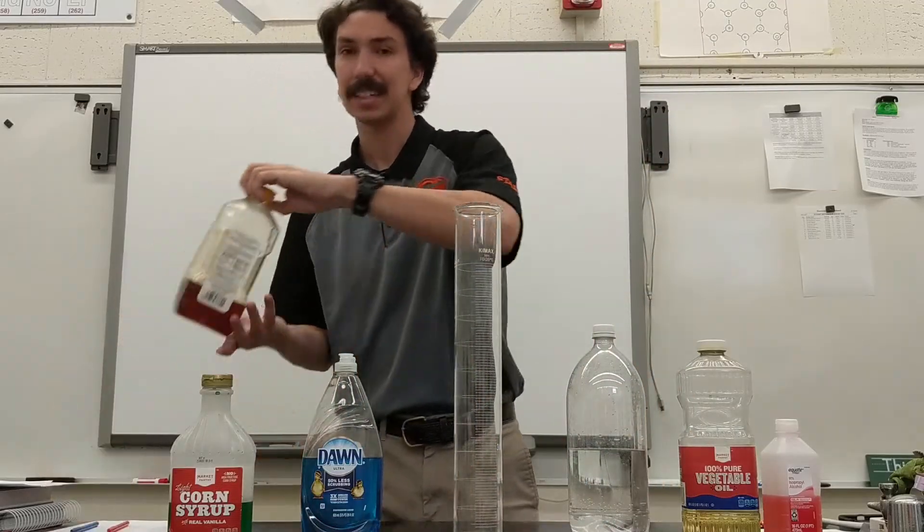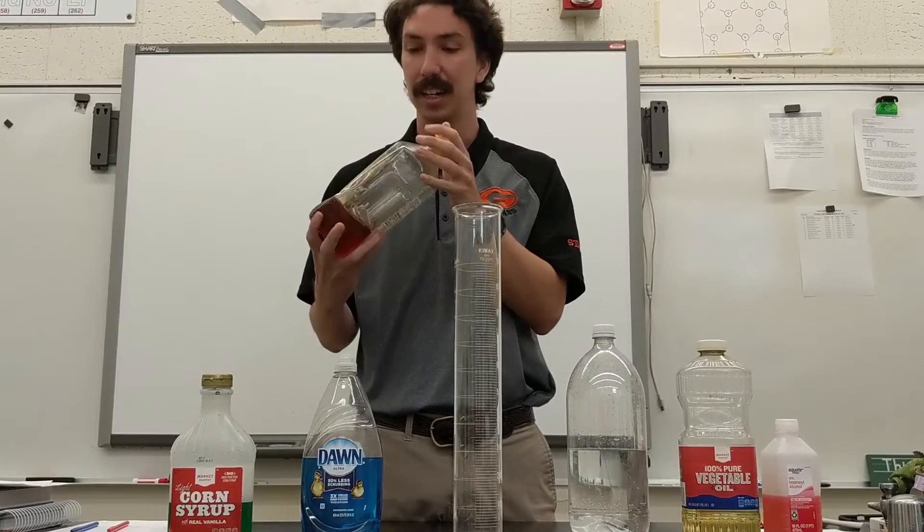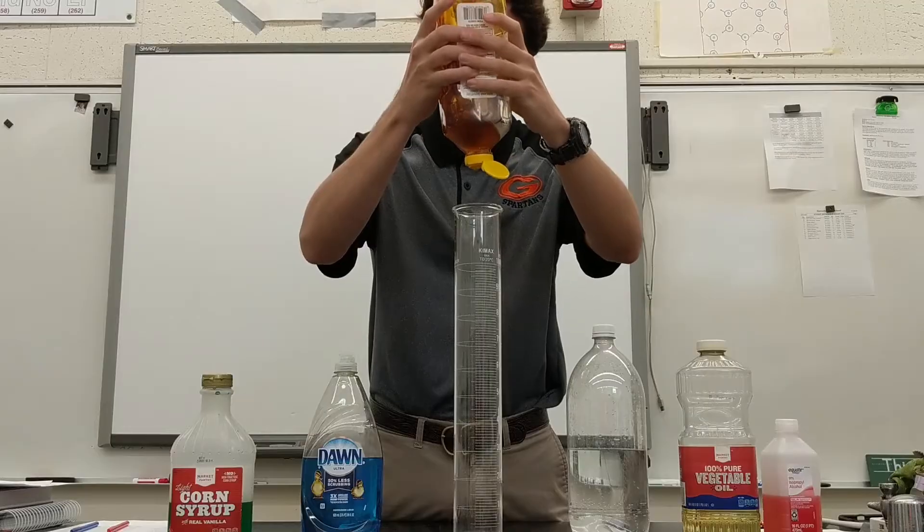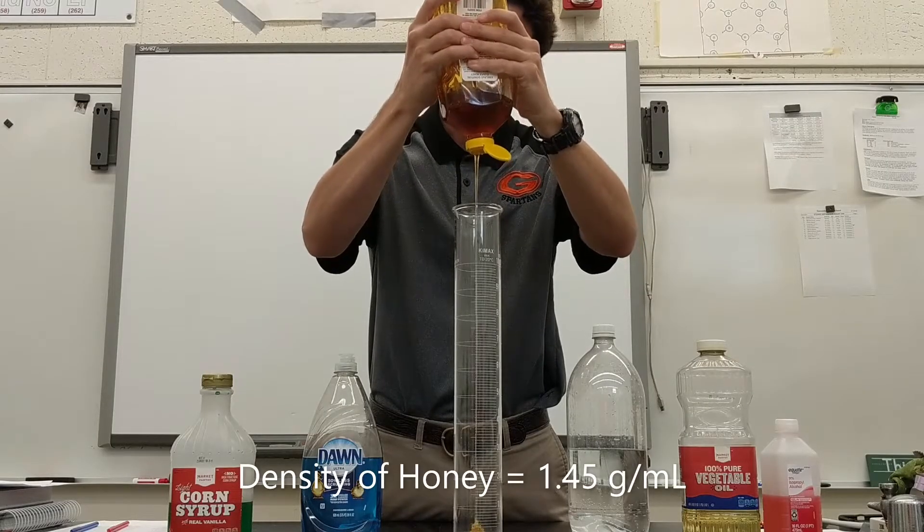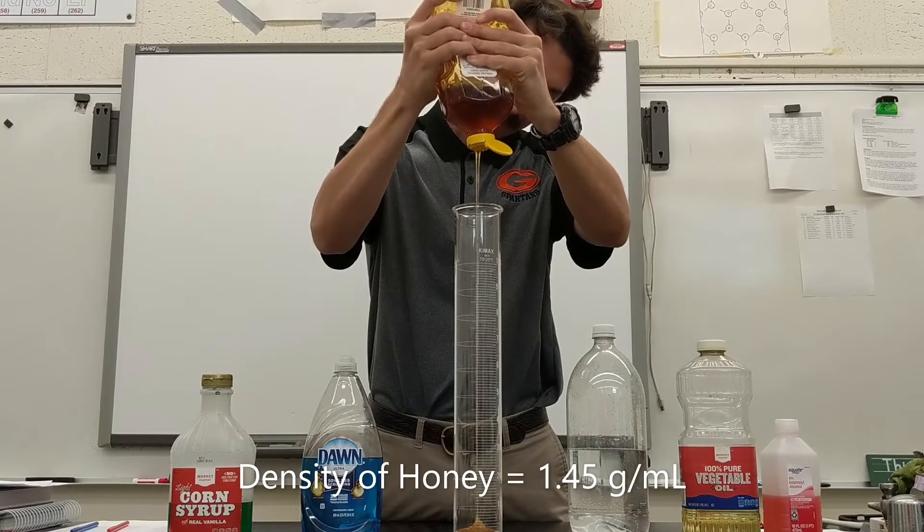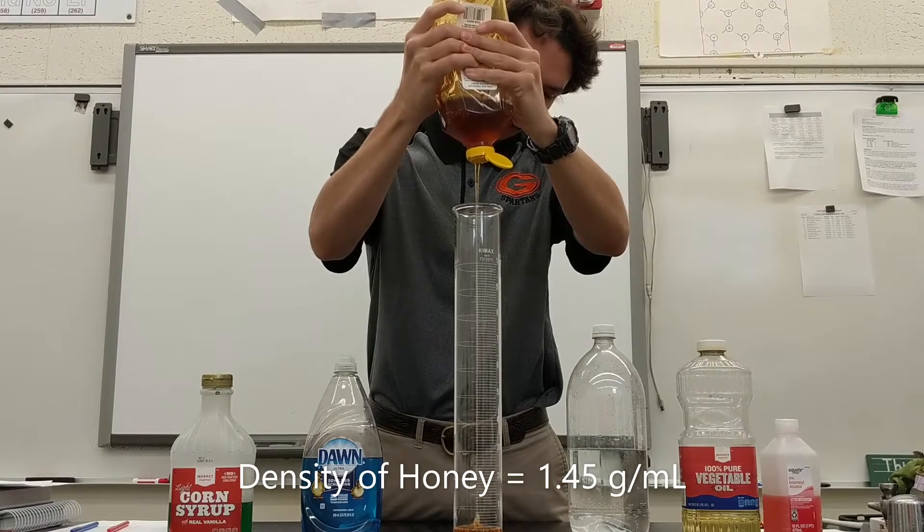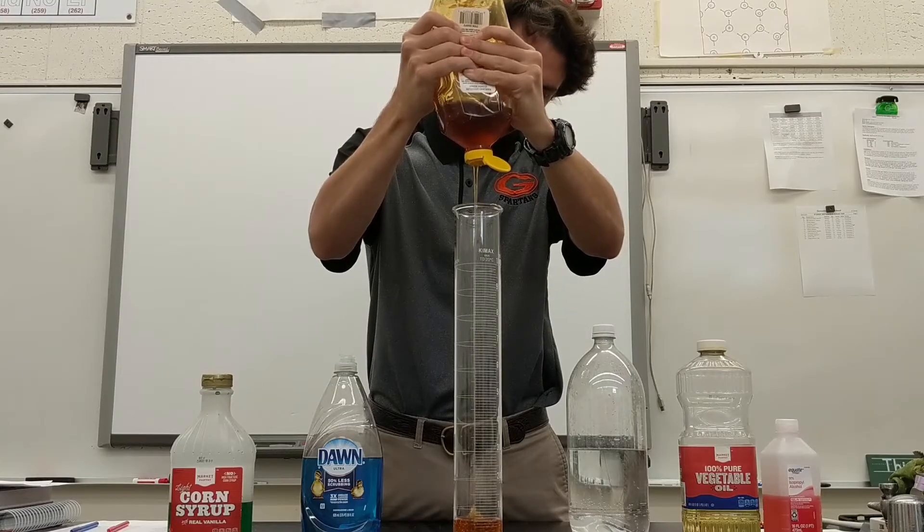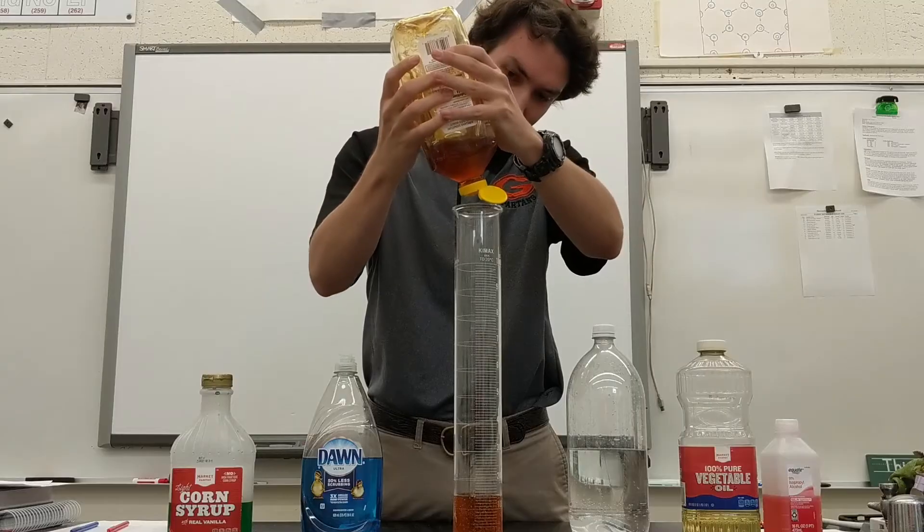So when doing this, we need to start with our most dense liquid, which is honey. Honey is a pretty dense liquid. And we're just going to add it to the bottom of our cylinder. And we don't really need to measure specific amounts. We just want about even amounts of everything. All right, so that looks like a good amount of honey.